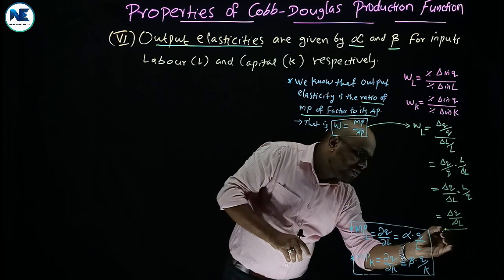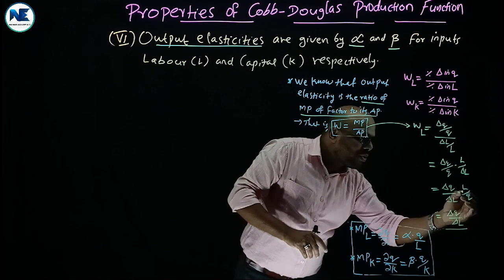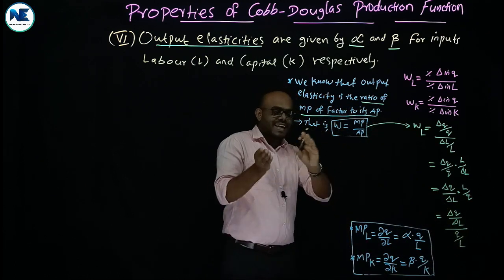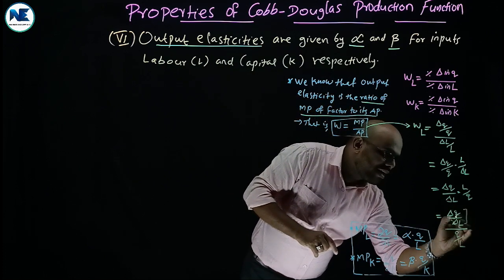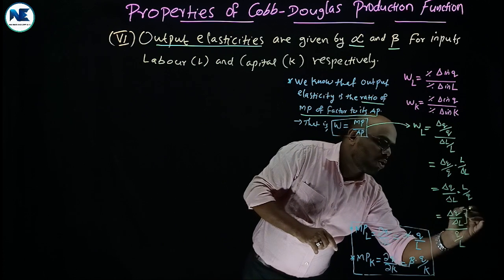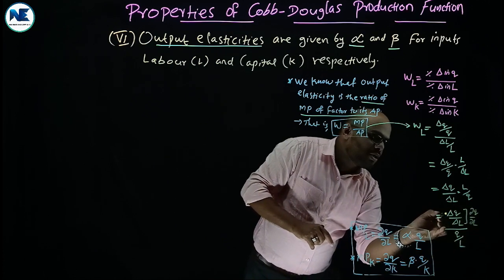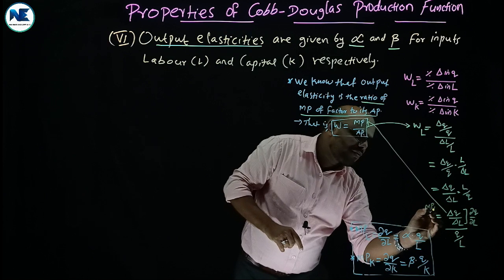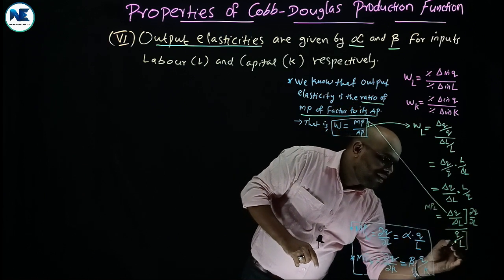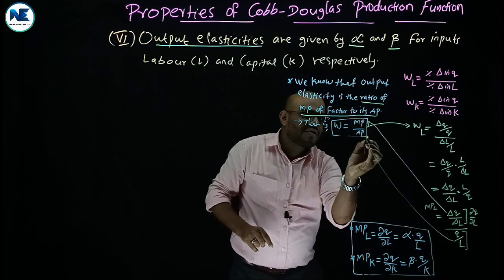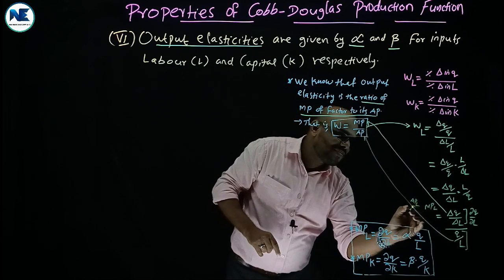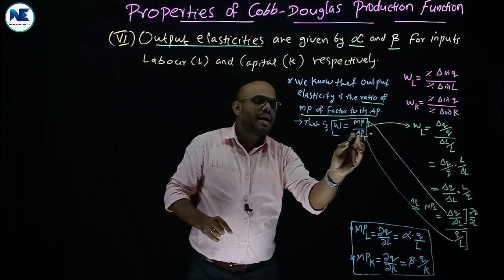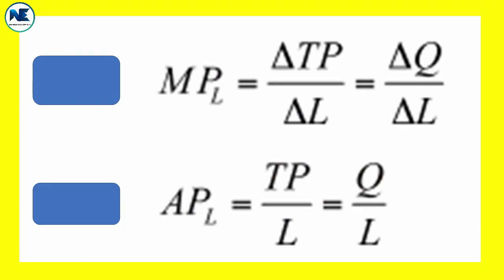We can identify two parts: delta Q by delta L, which is the marginal product of labor, and Q by L, which is the average product of labor. Therefore, output elasticity of labor is equal to marginal product of labor divided by average product of labor.